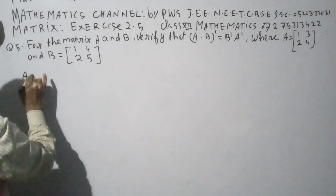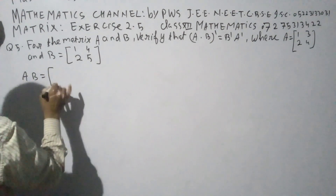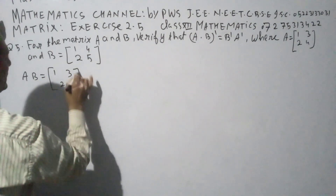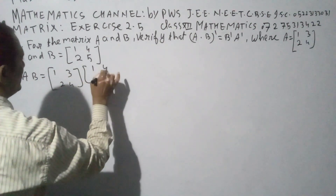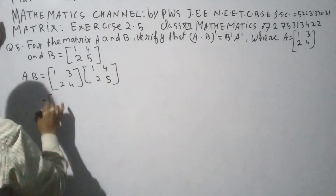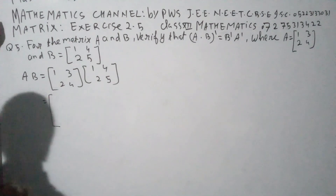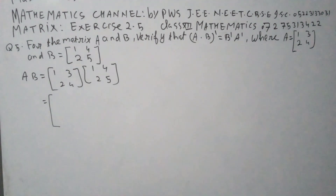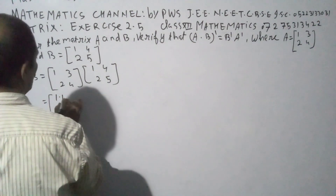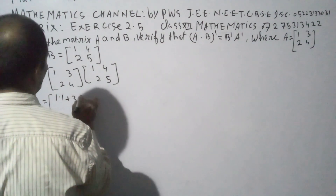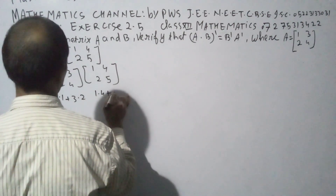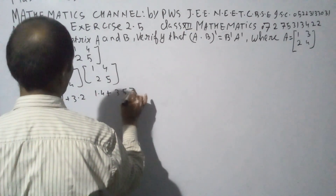Let's compute A times B. A times B: matrix A is 1, 3, 2, 4 multiplied by matrix B which is 1, 4, 2, 5. For the first row: 1 into 1 plus 3 into 2, and 1 into 4 plus 3 into 5.